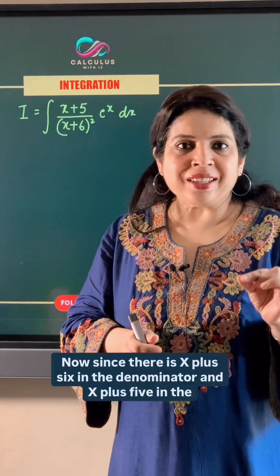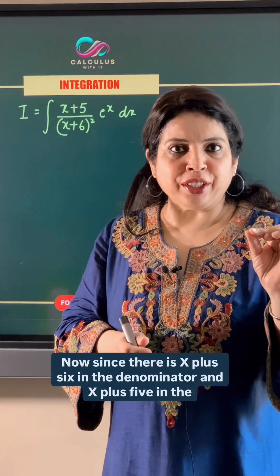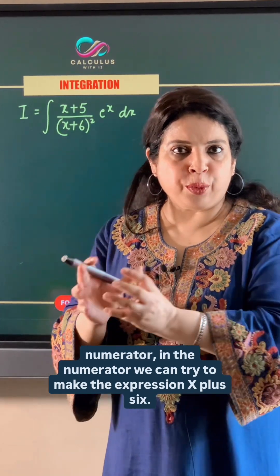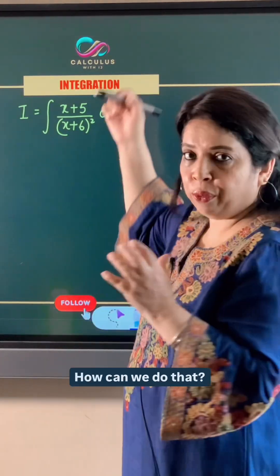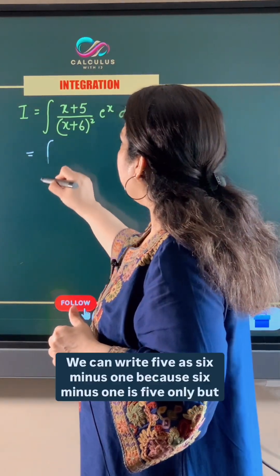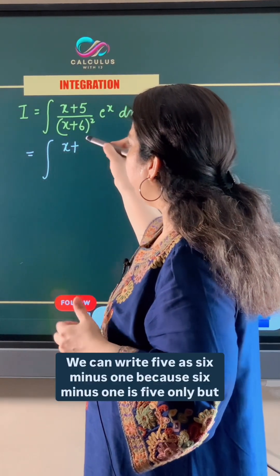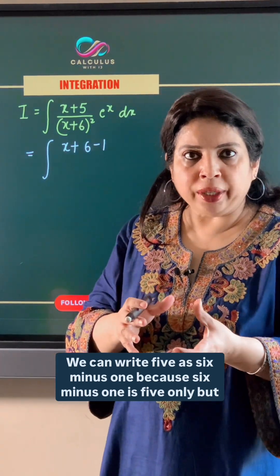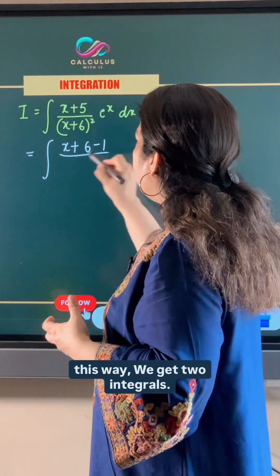Now since there is x plus 6 in the denominator and x plus 5 in the numerator, in the numerator we can try to make the expression x plus 6. How can we do that? We can write 5 as 6 minus 1 because 6 minus 1 is 5 only, but this way we get two integrals.